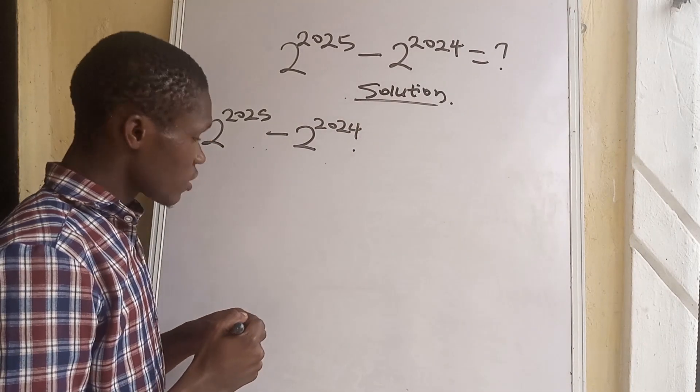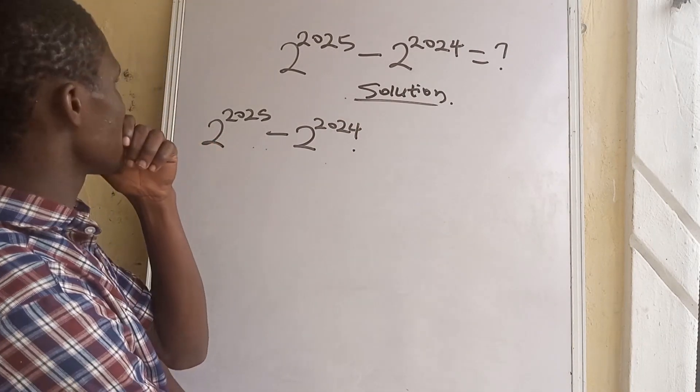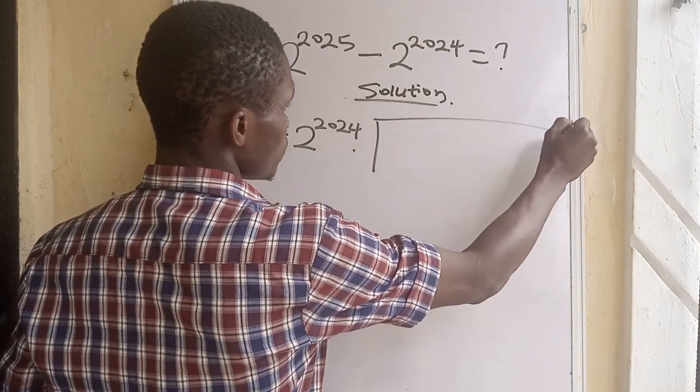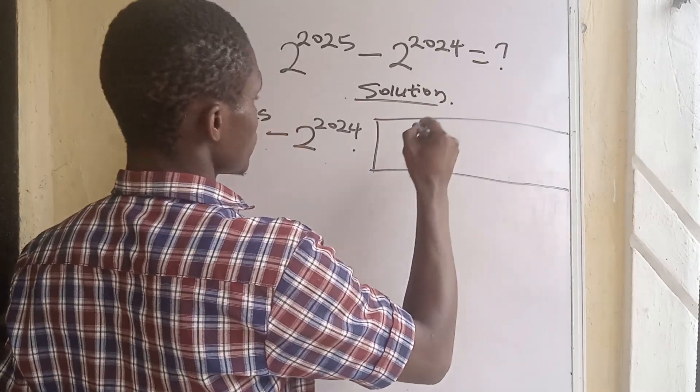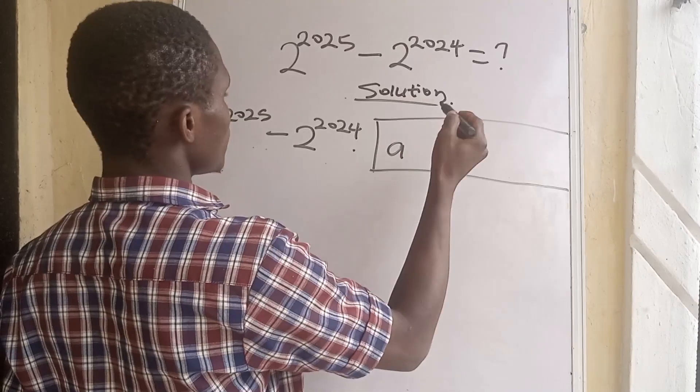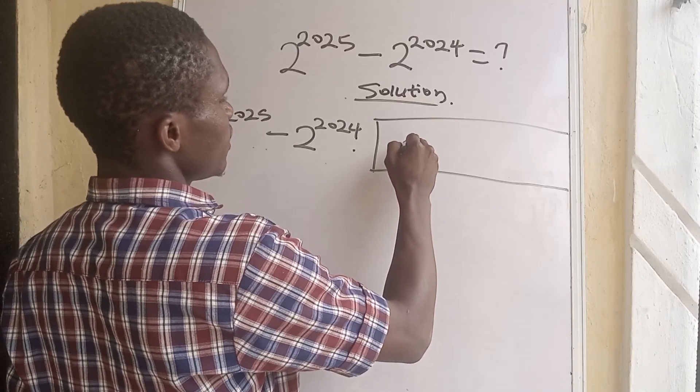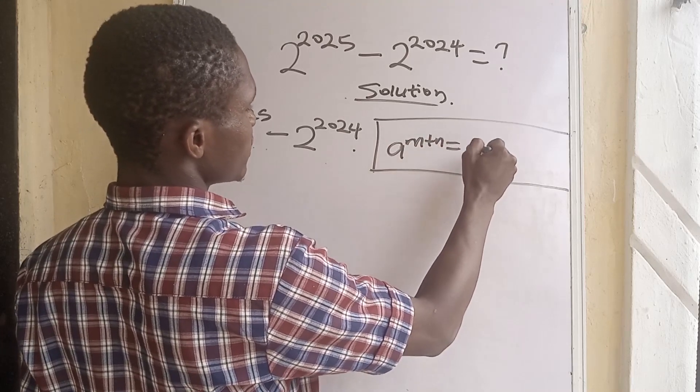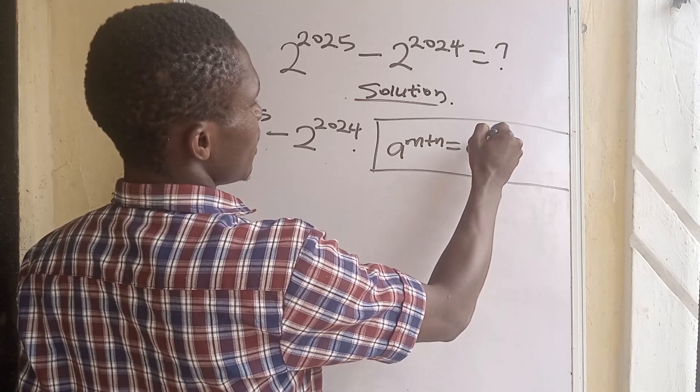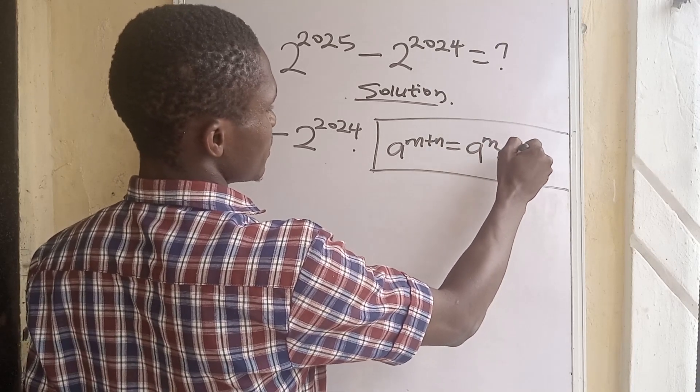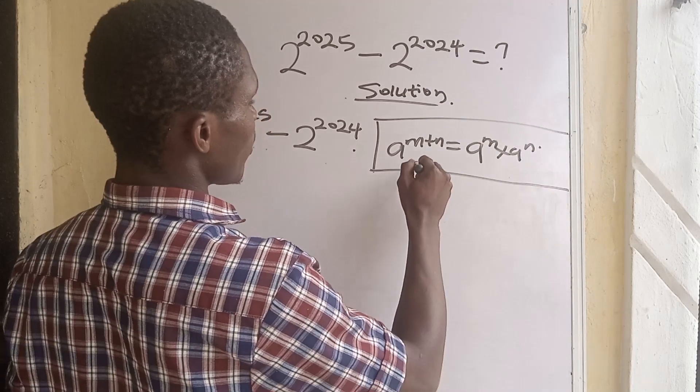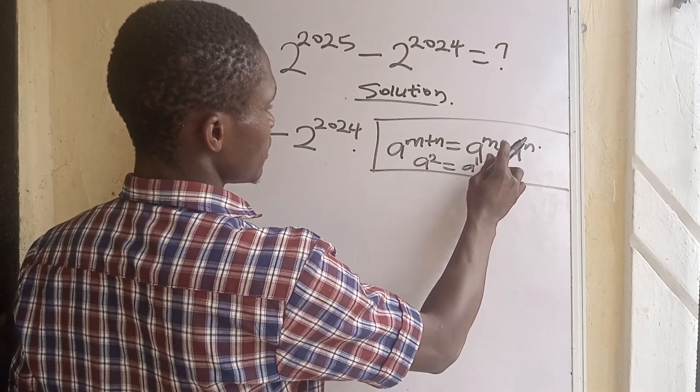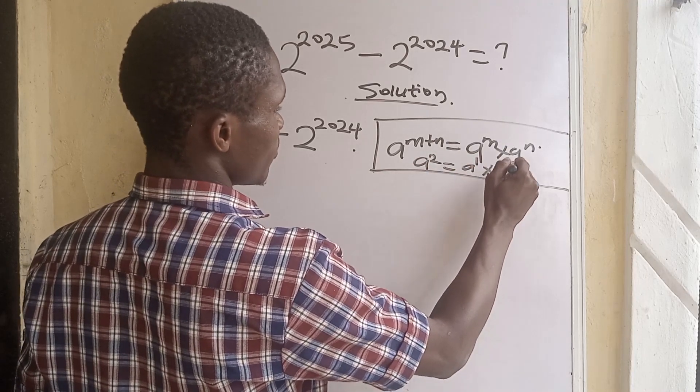At this point we are going to apply a principle. If we have a to the power of m plus n, this is also equals to a to the power of m times a to the power of n. You know that we are having a to the power of 2 is also equal to a to the power of 1 times a to the power of 1.